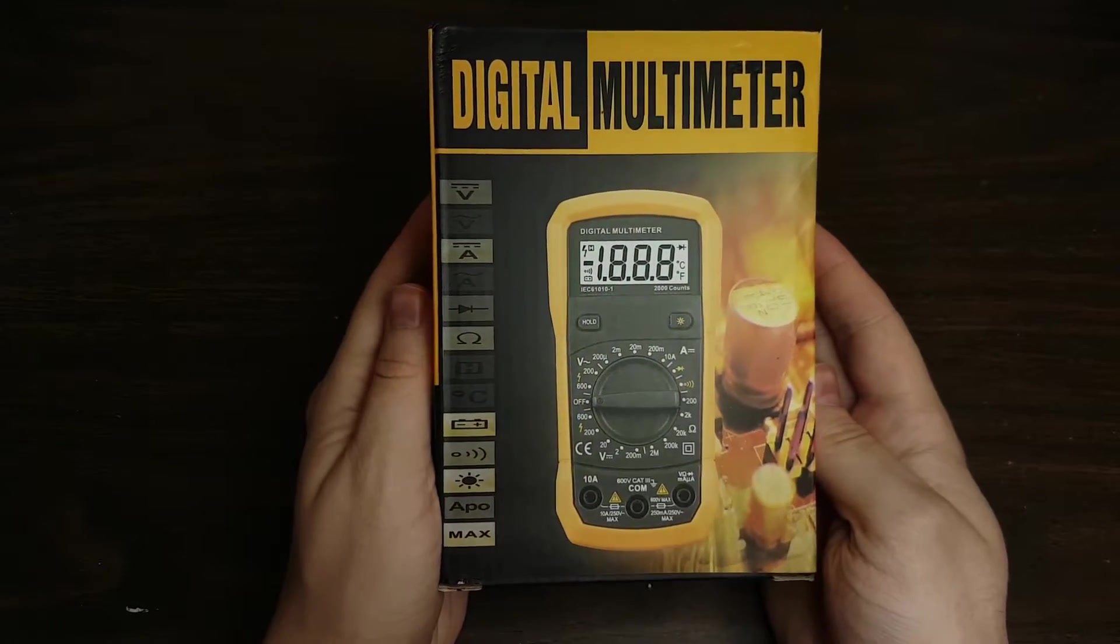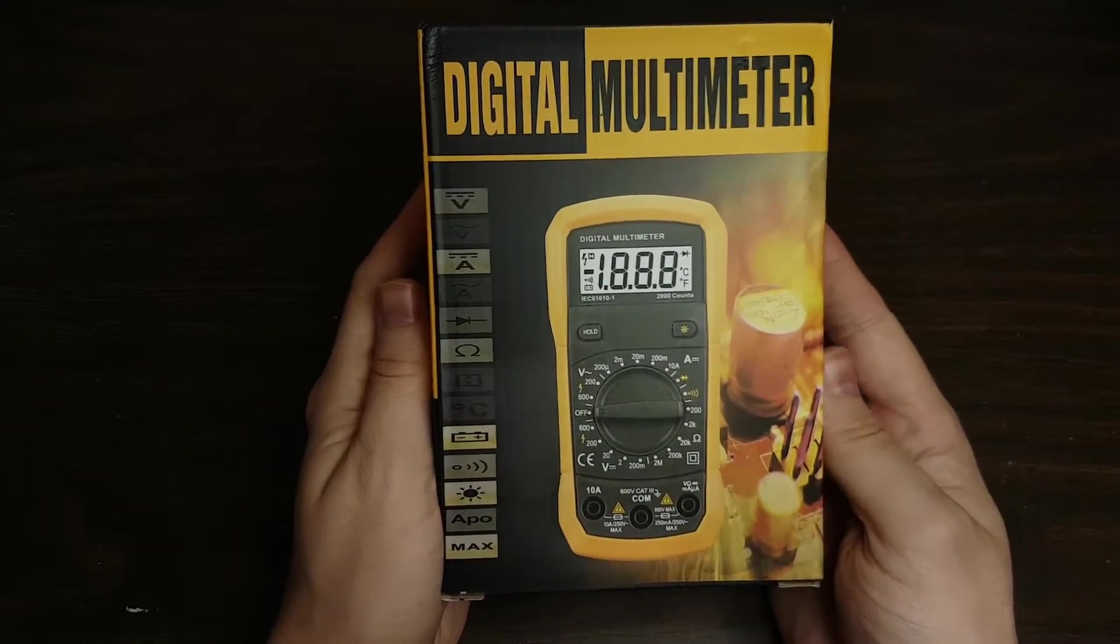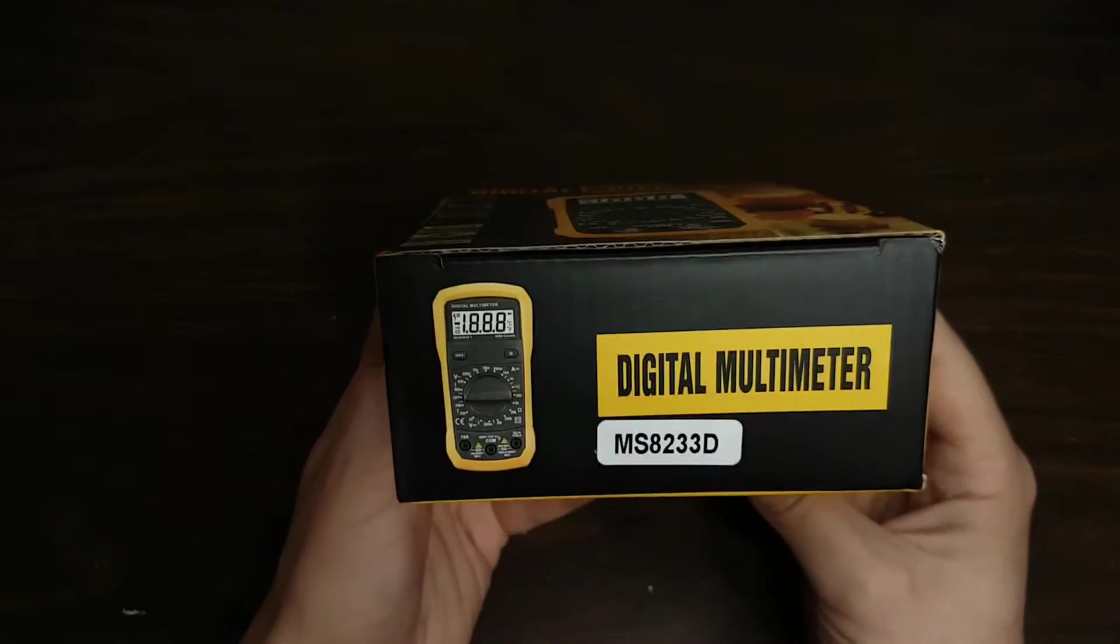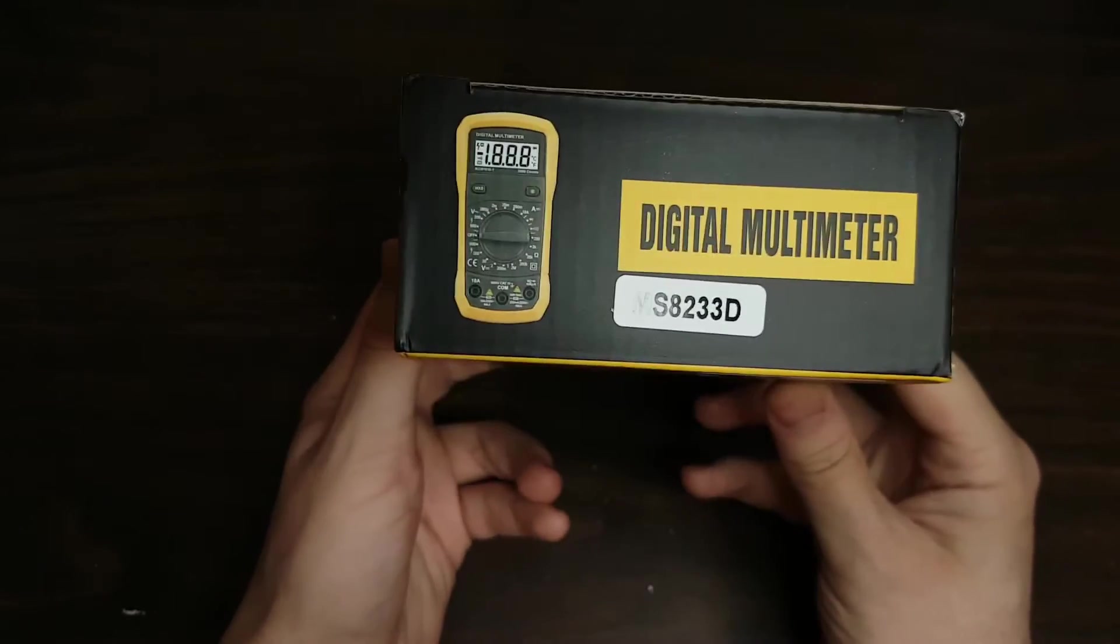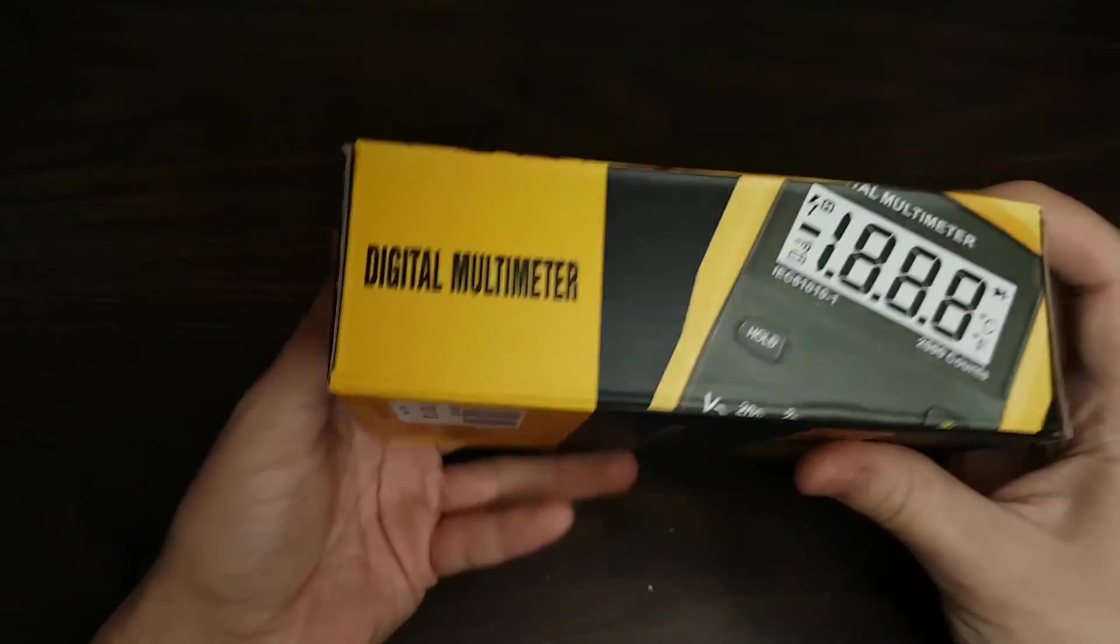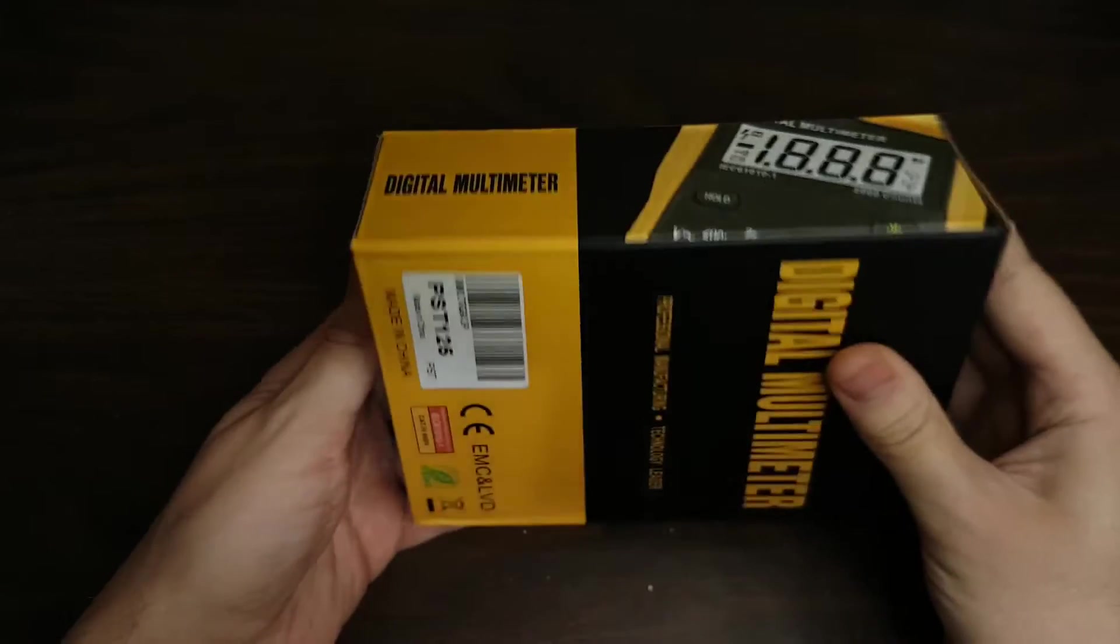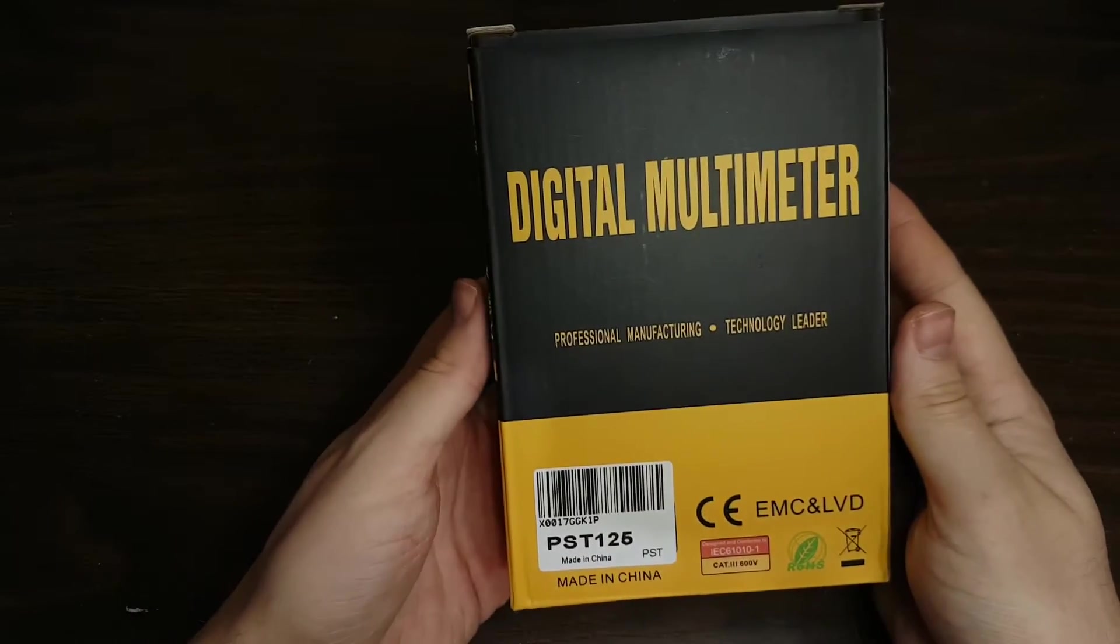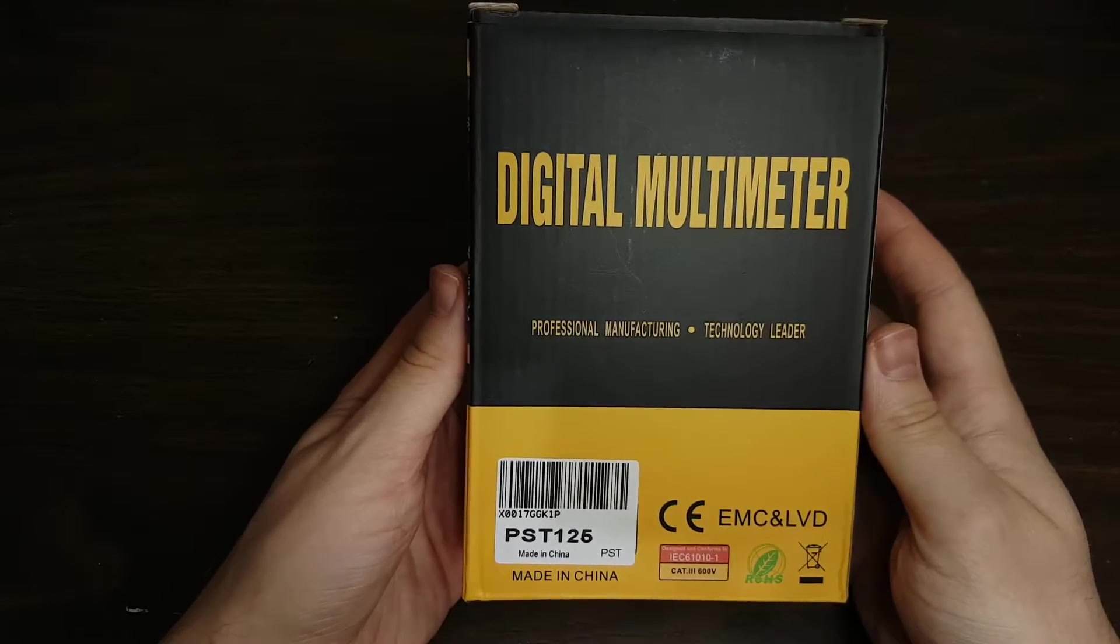The box is pretty standard packaging-wise. The front shows the symbols for the functions. The image they used on the front of the box and the bottom of the box are not actually images of the meter from inside. I'd hazard a guess that it's probably the image of the non-auto-ranging meter.